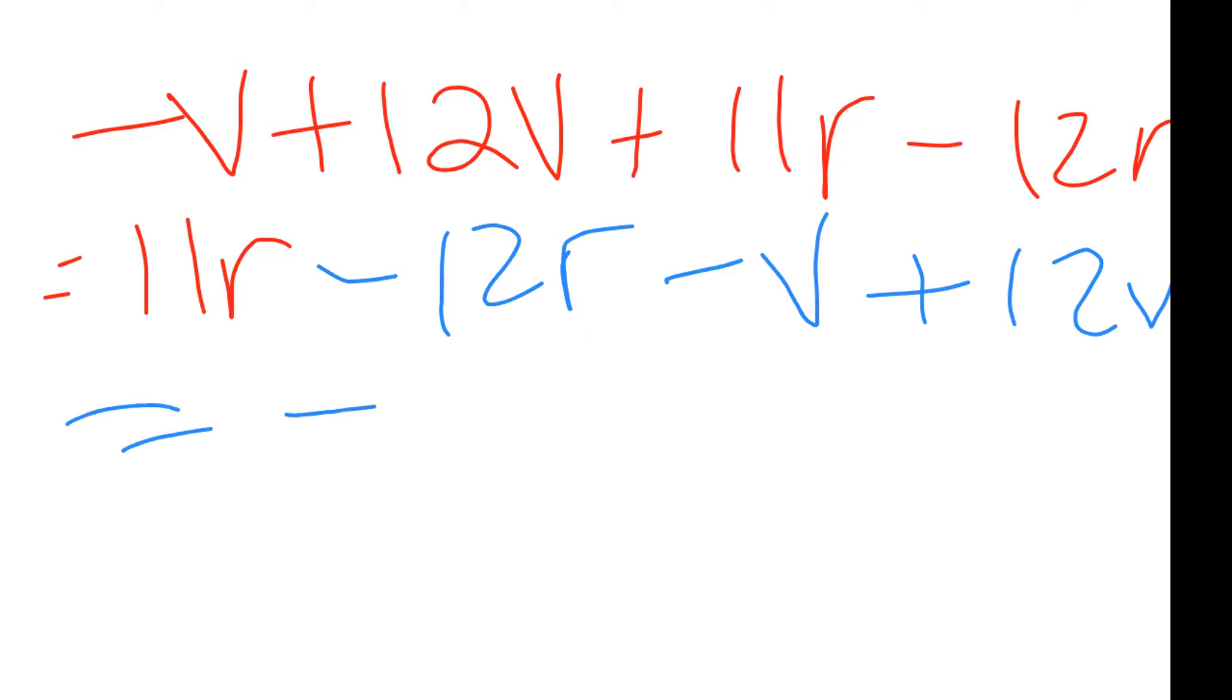So this would have been negative one r, different signs subtract. And for negative one r we just put negative r. Negative v plus 12v, different signs subtract and so take the sign of the larger, positive 11v.